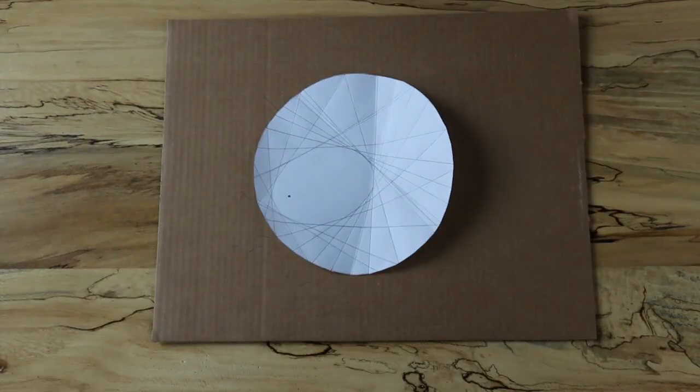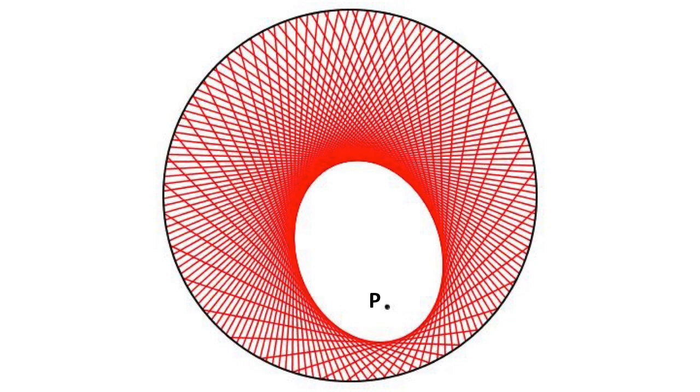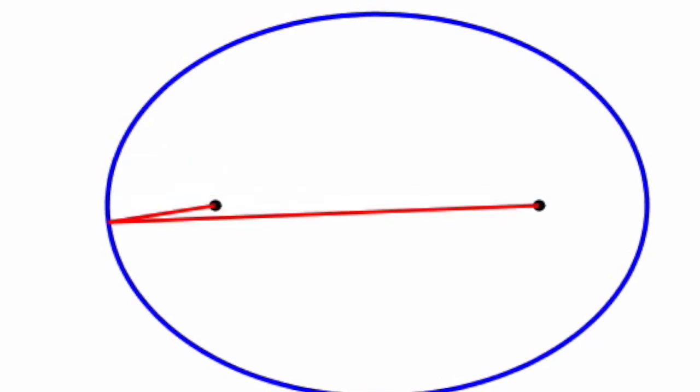A computer-generated picture looks like this. So why is an ellipse produced with this folding process? Remember how an ellipse is made?